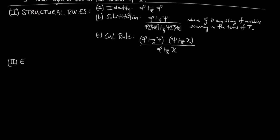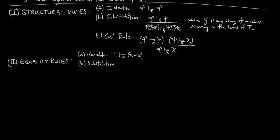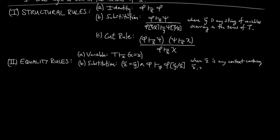The second category is equality rules. A: variable equality — we have the axiom 'true entails x equals x in the context of x.' B: the substitution equality rule — we have the axiom 'x equals y and phi entails phi with y substituted for x in the context of z,' where z is any context containing x, y, and the free variables of phi.